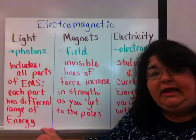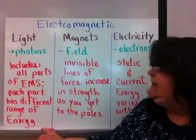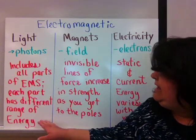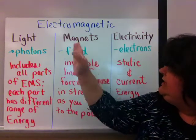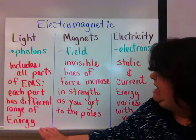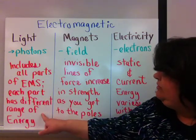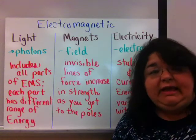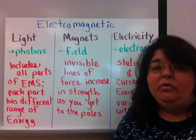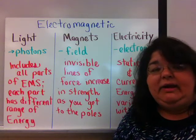From radio waves up to gamma rays, light is part of this electromagnetic energy. Each part has a different range of energy, so gamma rays have a lot more energy than a radio wave.